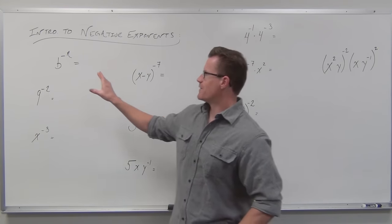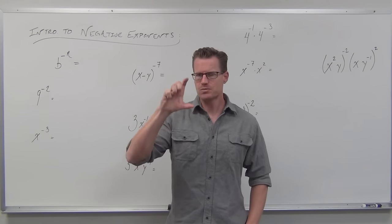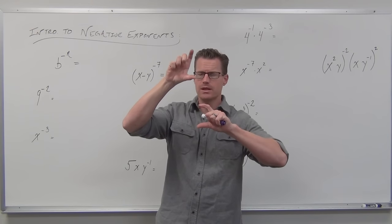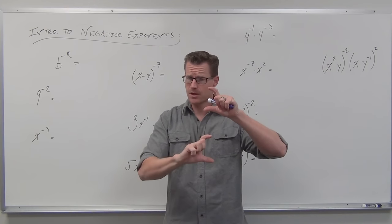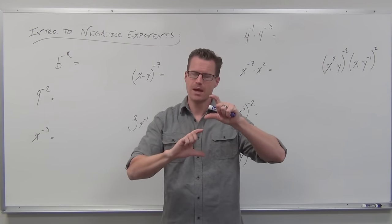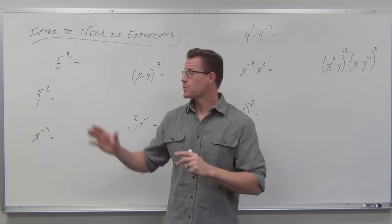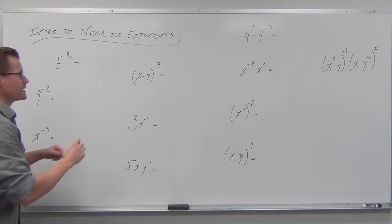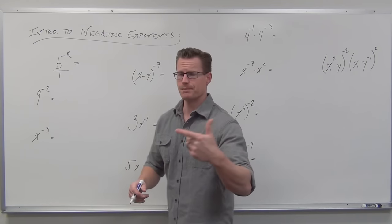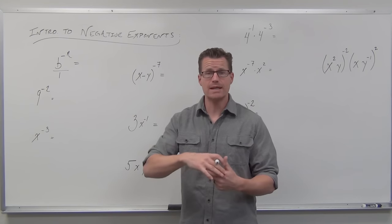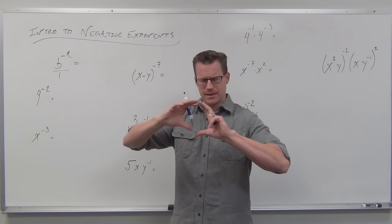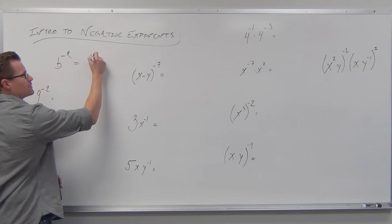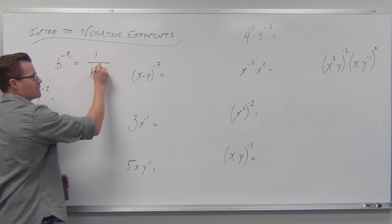The first thing is how a negative exponent is defined. Here's how I like to think about it: whatever is being raised to a negative exponent is on the wrong side of a fraction. If it's on the top — the numerator — with a negative exponent, it really should be on the denominator. If it's on the denominator with a negative exponent, it really should be on the numerator. That little factor with a negative exponent needs to move.